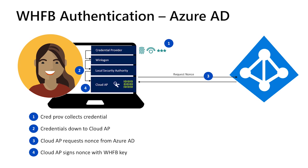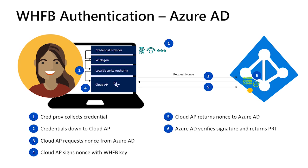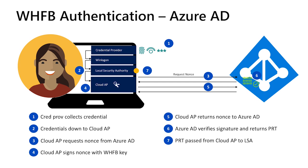The signed nonce will be returned by Cloud AP to Azure AD, which will use the public key that the user registered during provisioning to confirm that the nonce was indeed signed by the correct private key — a registered key was used. Azure AD will generate a Primary Refresh Token, or PRT, for the user and send it back to the device. The PRT will be cached by the LSA so it can be used in future authentication requests to Azure AD and enable single sign-on to any Azure AD resources. The LSA will notify WinLogon that authentication occurred successfully and WinLogon will load the user's profile. The user will land on the desktop and can access any cloud resources using the PRT alone.